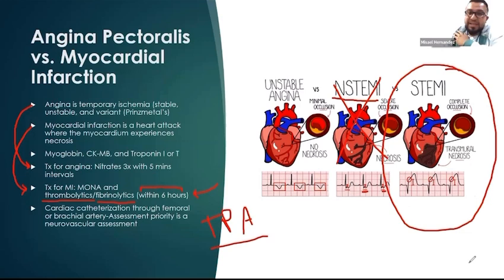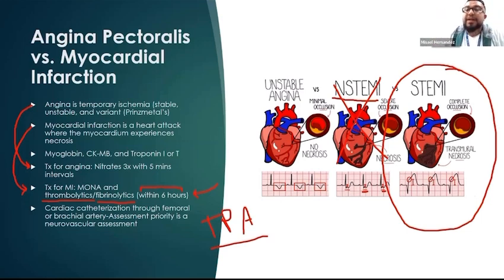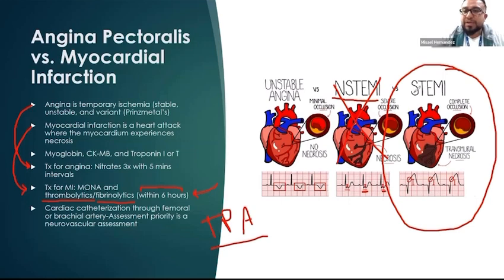With a STEMI, we need to eliminate that clot and we accept the risk of bleeding — we can give blood transfusions during the acute phase of an MI if needed. The reason is that we cannot bring the heart muscle back to life once it dies. That's why we give thrombolytics for STEMI but not for non-STEMI.